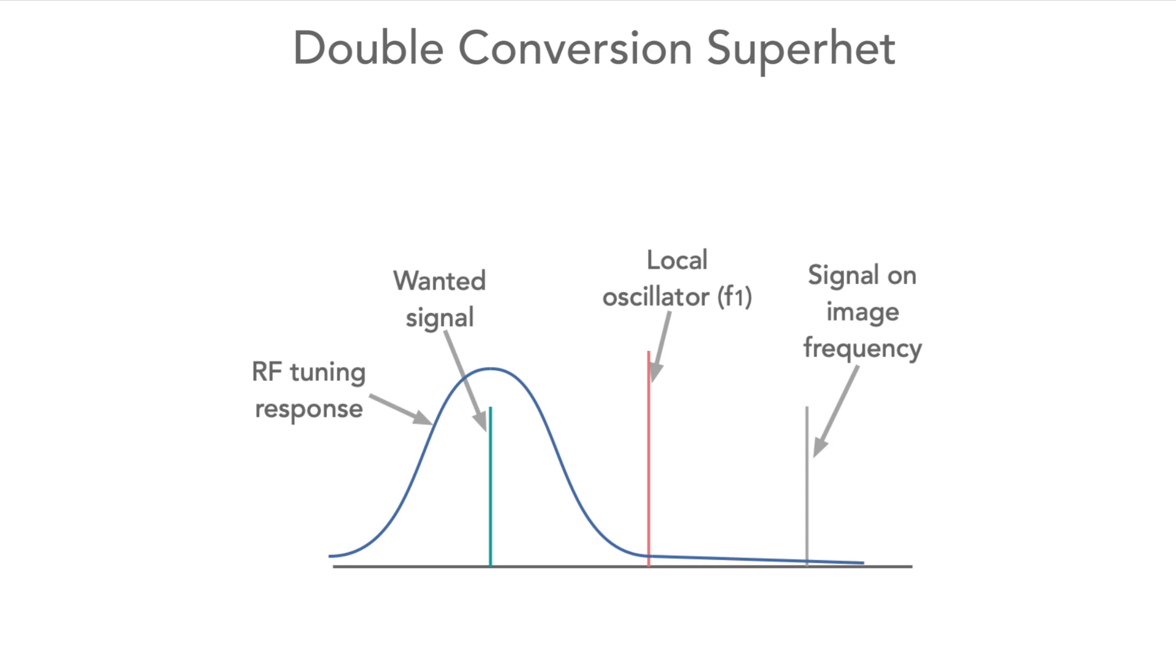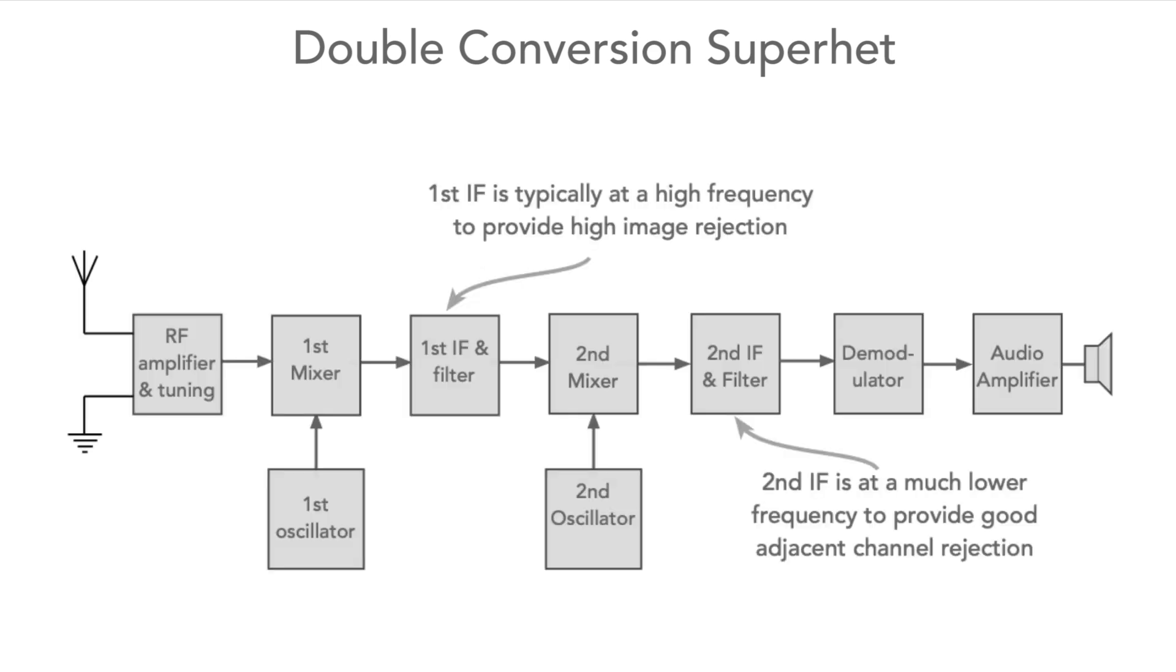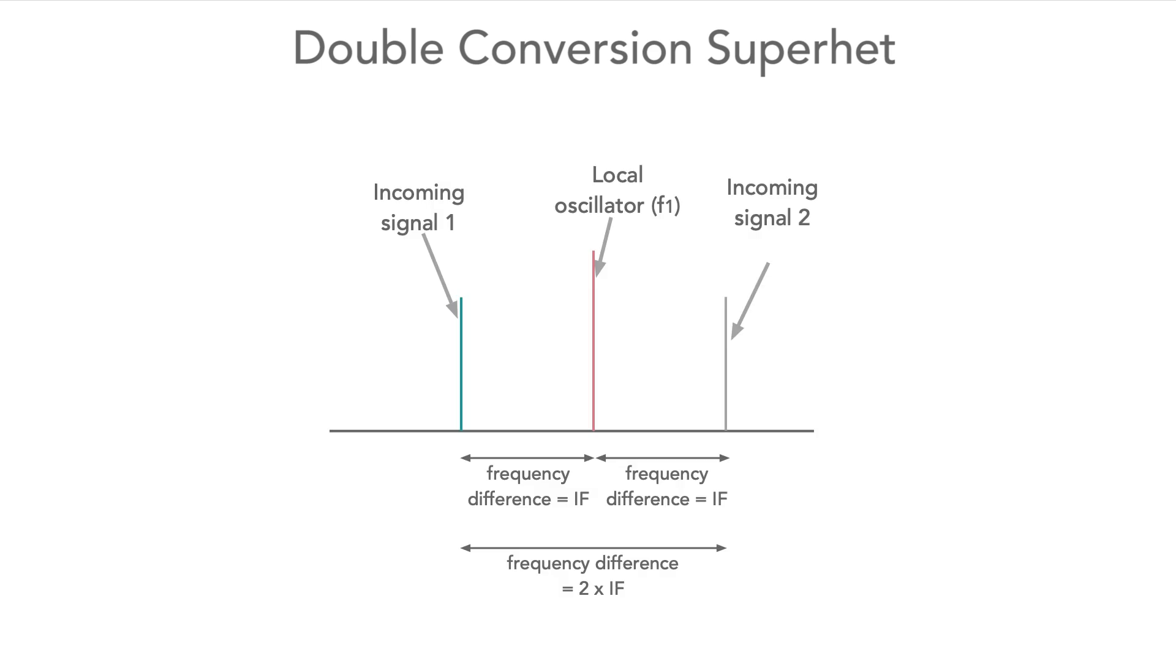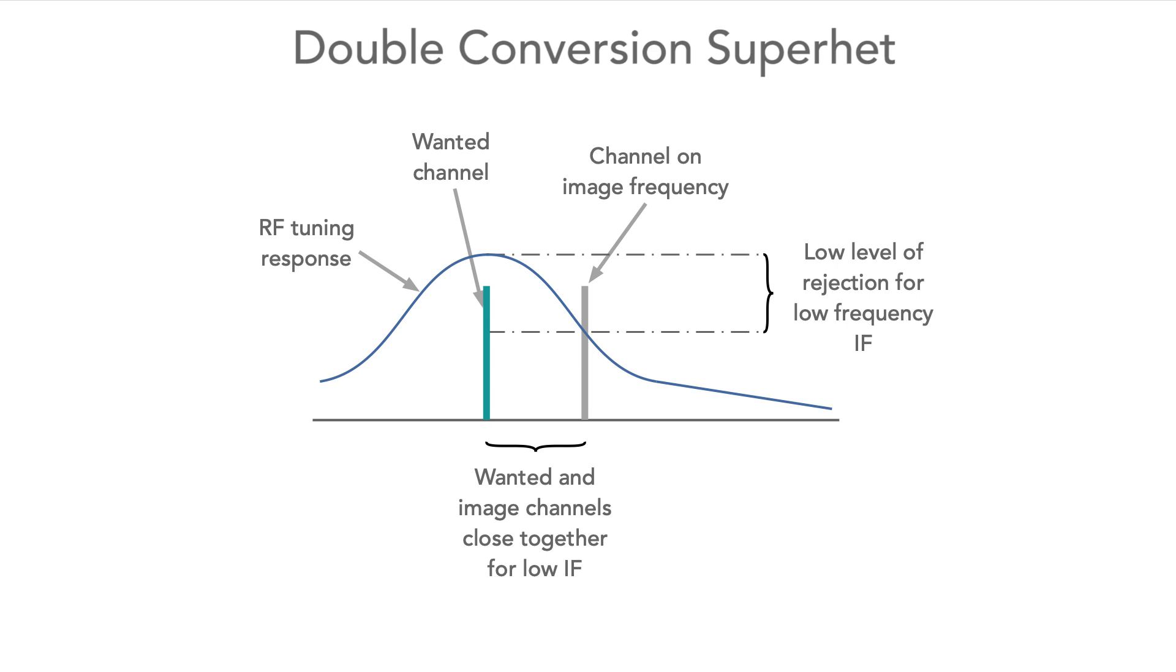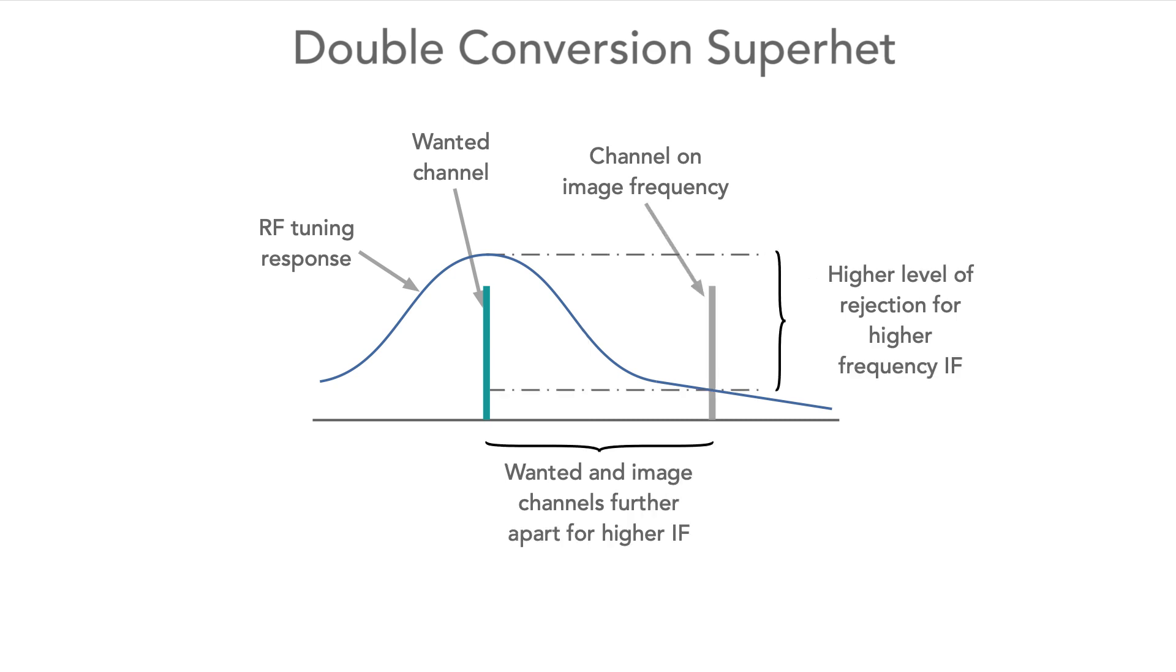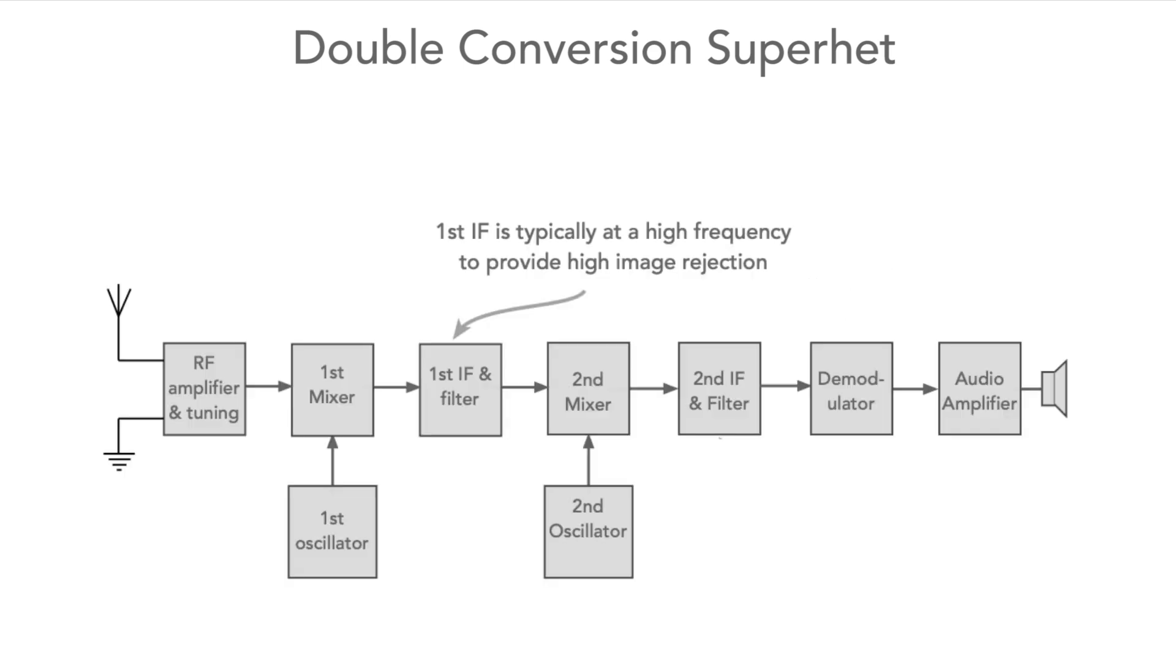One of the key issues of the superhet radio is that of image response. So having a double conversion superhet format enables the first IF to remain high. As the image is removed from the wanted signal by twice the IF, this keeps the wanted signal and image further apart for better filtering. However, having a second lower IF allows for good adjacent channel filtering. The double conversion approach enables a high frequency IF for good image and a low IF for good adjacent channel filtering, both of these in the same radio.